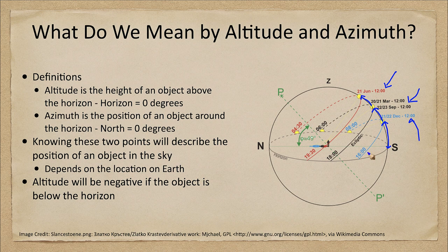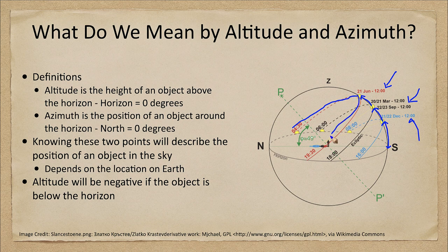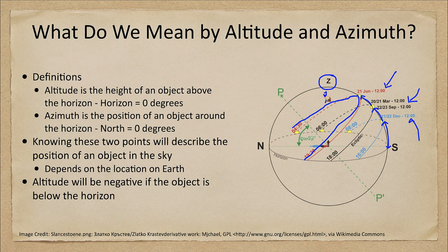The altitude will also be different at different times of day. Here we're looking at the noontime altitude when the sun is highest in the sky. When the sun rises in the east it would have a zero altitude, then rise higher and higher until it reaches a peak around noon, then go down to set, returning to zero degrees altitude. That changes depending on the person doing the observing. The maximum altitude you can get would be at the zenith, which is an altitude of 90 degrees — the highest point in the sky, straight overhead.